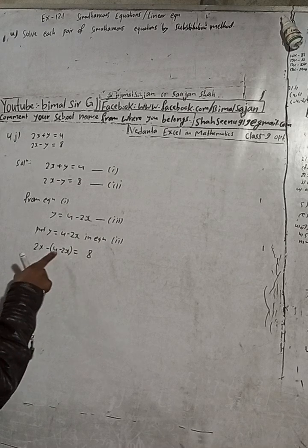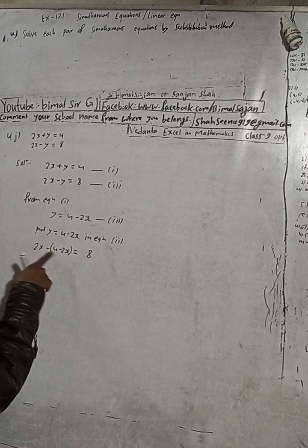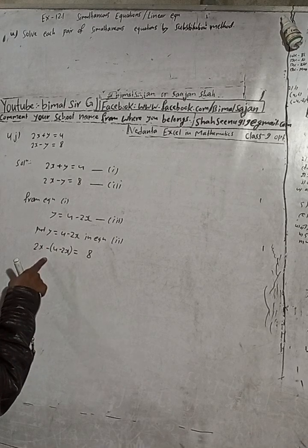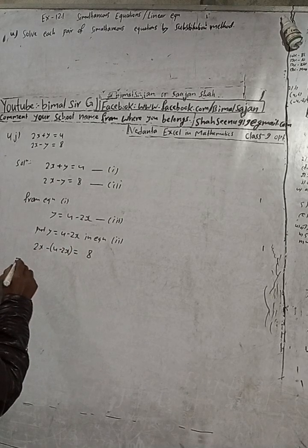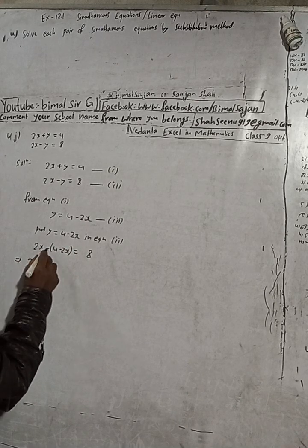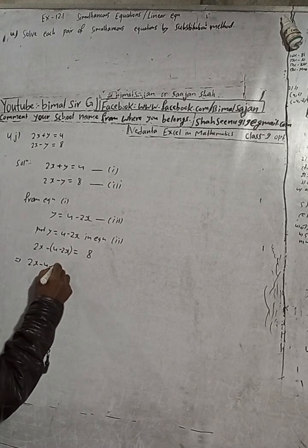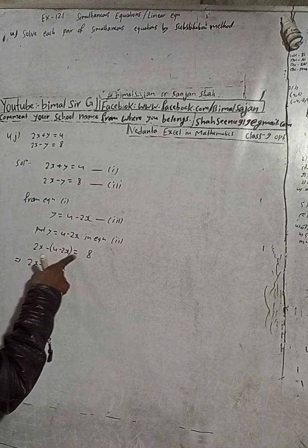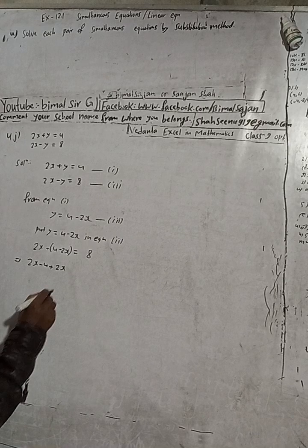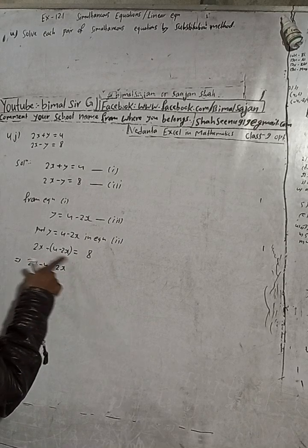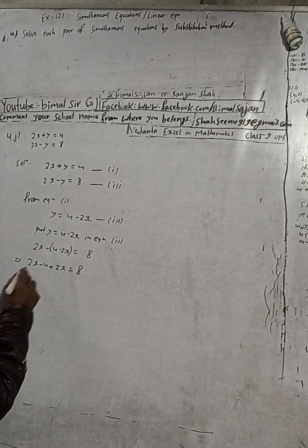This bracket will change the sign. So we have 2x - (4 - 2x). This becomes 2x - 4 + 2x. The minus minus becomes plus. Now we can see this equals 8.